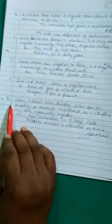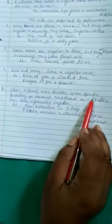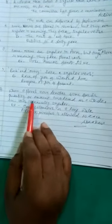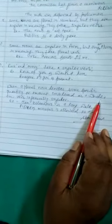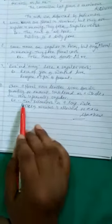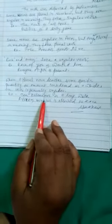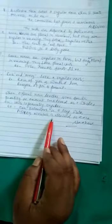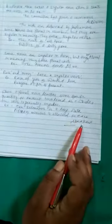Rule number eight. When a plural noun denotes some specific quantity or amount considered as a whole, the verb is generally singular. As for example, 10 kilometers is a long walk. 15 minutes is allowed to each speaker.